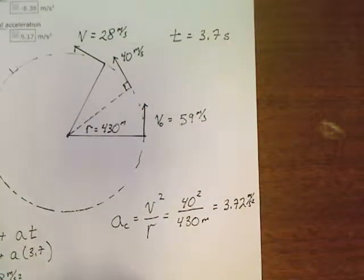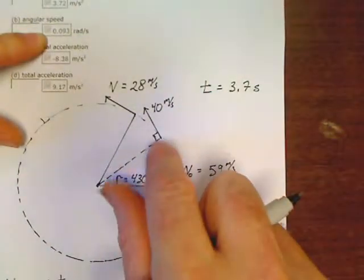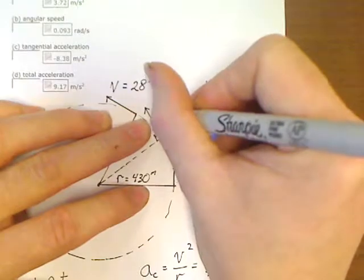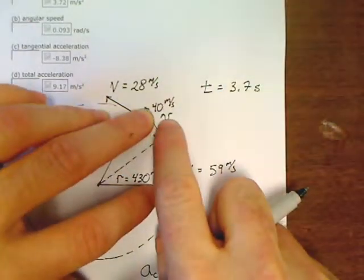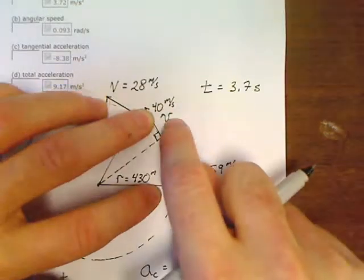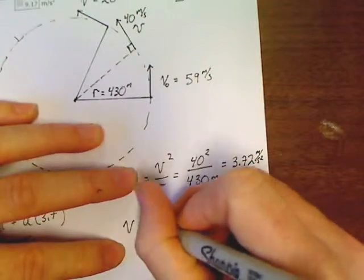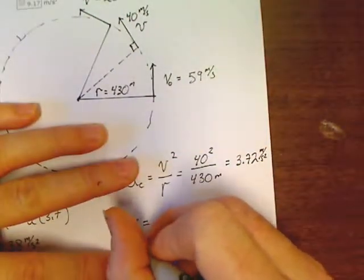Now, it says, find the angular speed at this same point. So, in other words, it's giving you a V, and now it says, what is W for this point? How can we find W if we've got V? Well, we've got an equation that ties the two together. V is equal to rW.